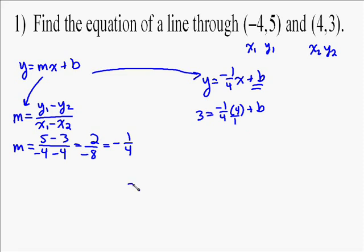We need to multiply this out. Negative 1 fourth times 4 over 1 gives you negative 4 over 4, which is just negative 1. So it's going to be 3 equals negative 1 plus b. Now you need to solve for b, so add 1 to both sides, and you find out b equals 4.